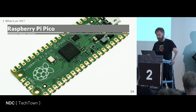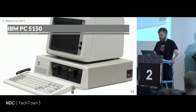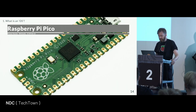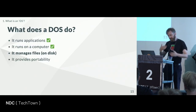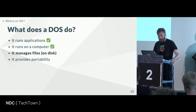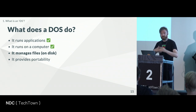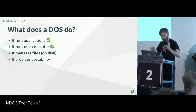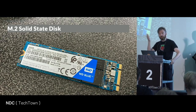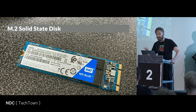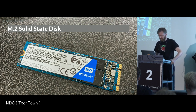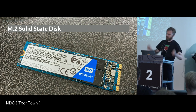The world we live in is wild in terms of access to computing power. If this $1,500 machine is a computer, why isn't this $4 board a computer when it is more powerful and has more capacity? Maybe we can make it a computer. So we've talked about applications running on a computer — what else does a DOS do? It manages files on disk. Disks are called disks because they are round. These days SSDs do a very good job of pretending to be disks.